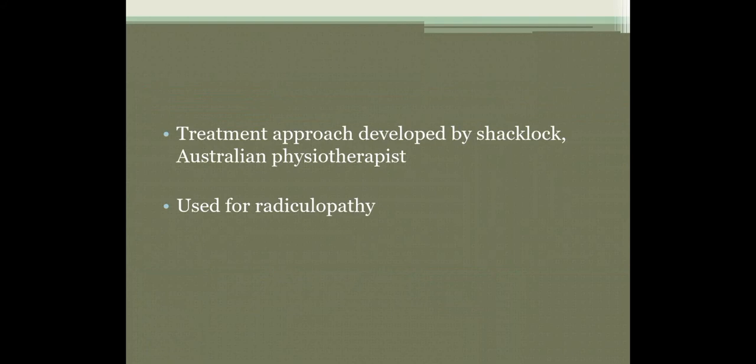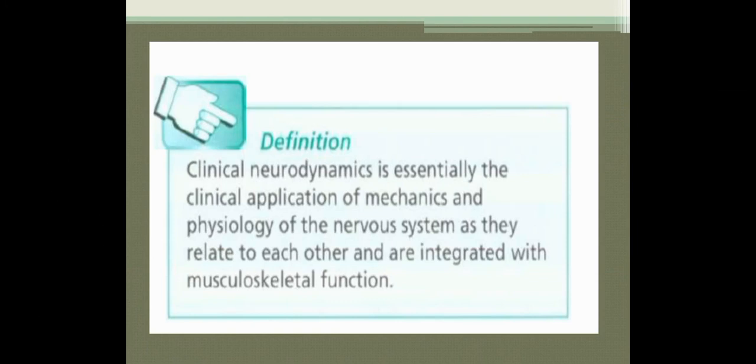For example, in case of intervertebral disc prolapse, when there is disc prolapse, the nerve root gets compressed and because of that there can be sliding dysfunction or gliding dysfunction. To relieve this dysfunction, we need to mobilize the nerve. Everyone is familiar with how to mobilize the joint — when we mobilize different joints like shoulder, knee, or hip joint, we give anterior or posterior glide, which increases range of motion and decreases limitation. So when we use mobilization for the nerves, that is called neurodynamics.